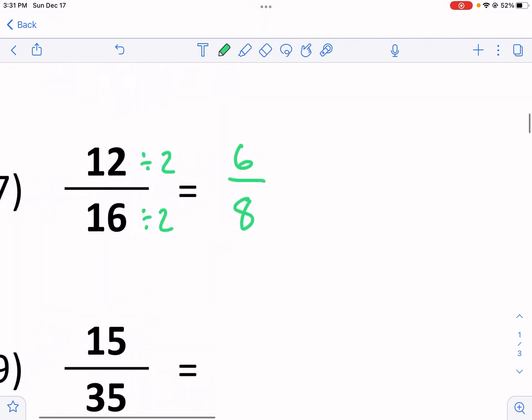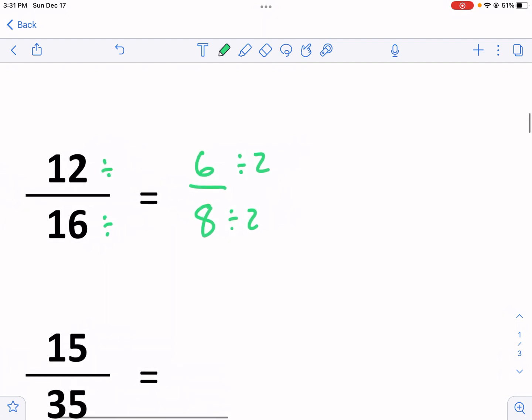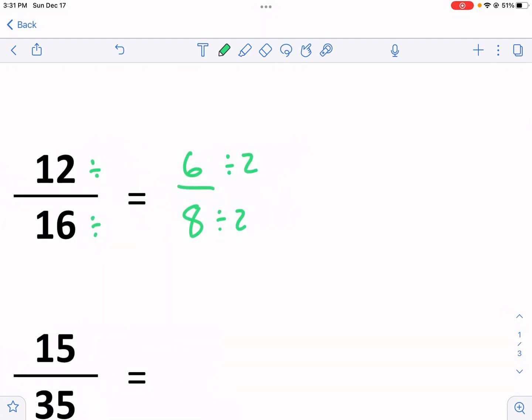So, yes, six out of eight, or six over eight is a simpler form for 12 out of 16. It's not the simplest form, and the reason why I know is I can divide these numbers by two again. Six and eight also share a common factor. That's how I know I didn't divide it by the greatest common factor is if they still have a common factor. In this case, it's two again. So, I get three out of four, and now I'm done.